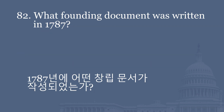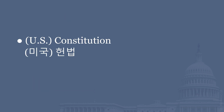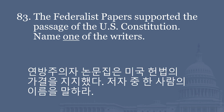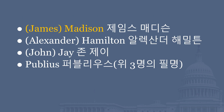What founding document was written in 1787? U.S. Constitution. The Federalist Papers supported the passage of the U.S. Constitution. Name one of the writers. James Madison. Alexander Hamilton. John Jay. Publius.